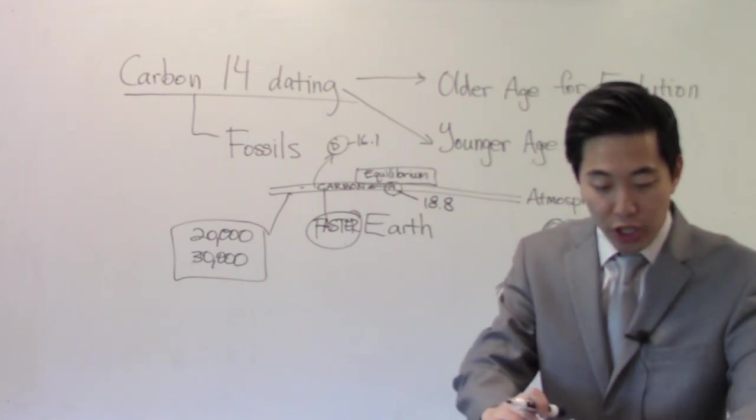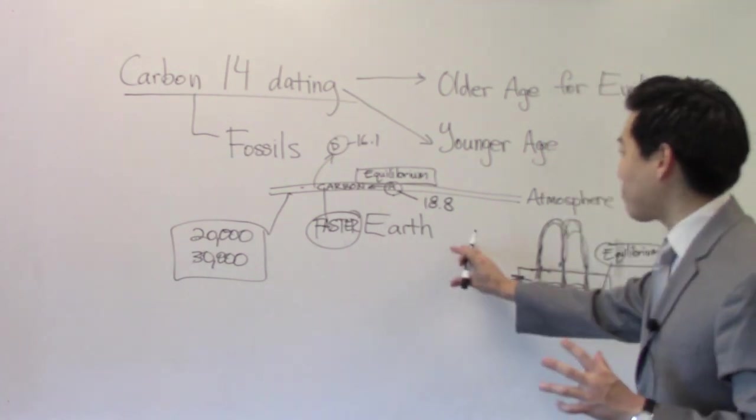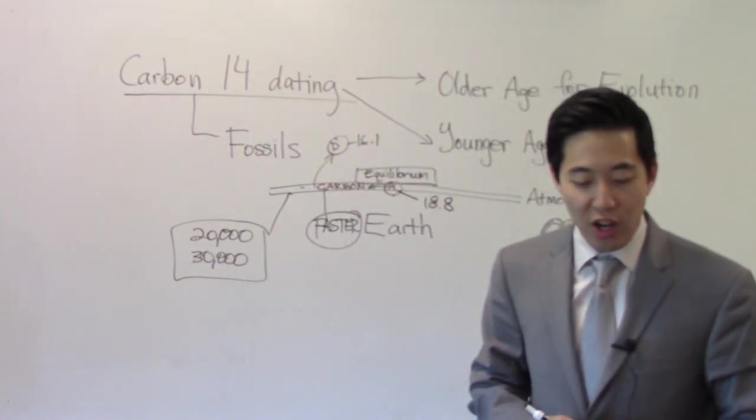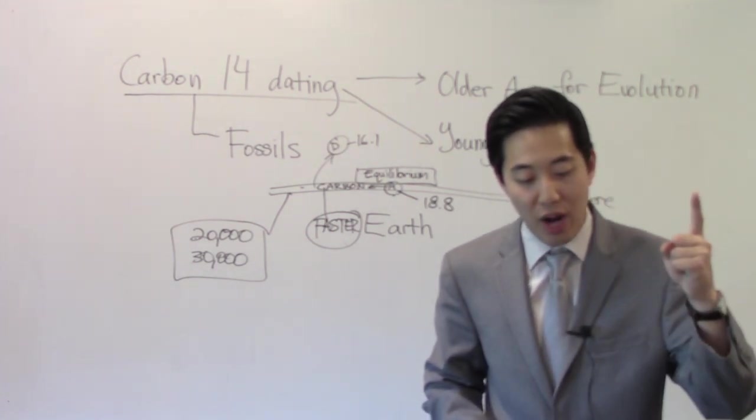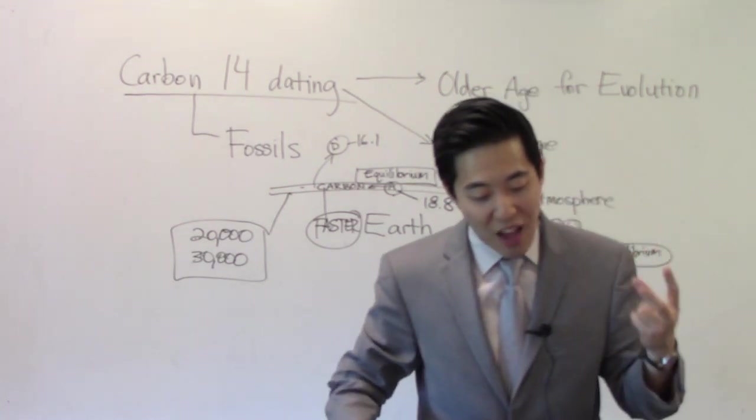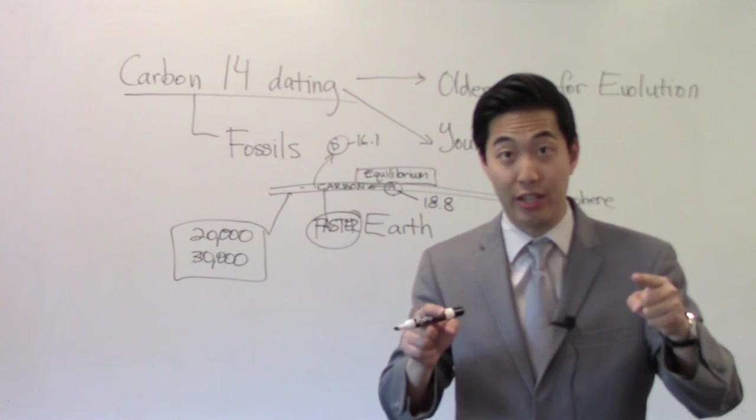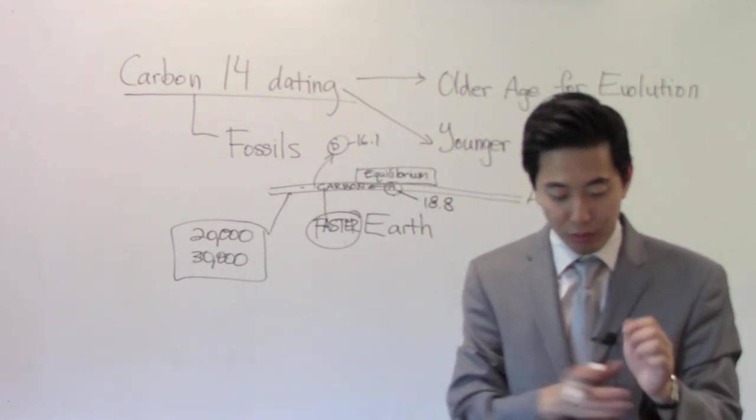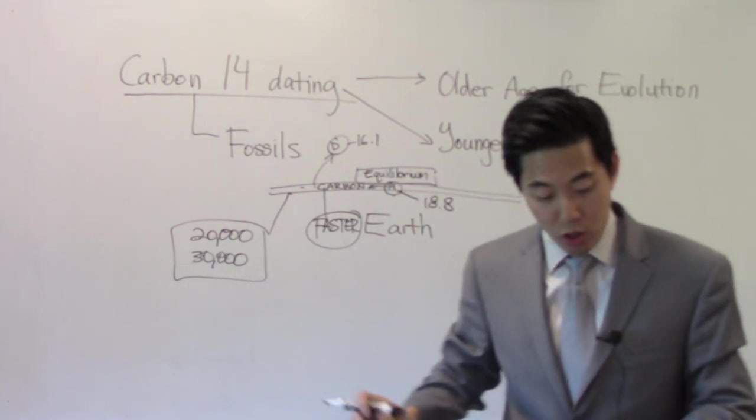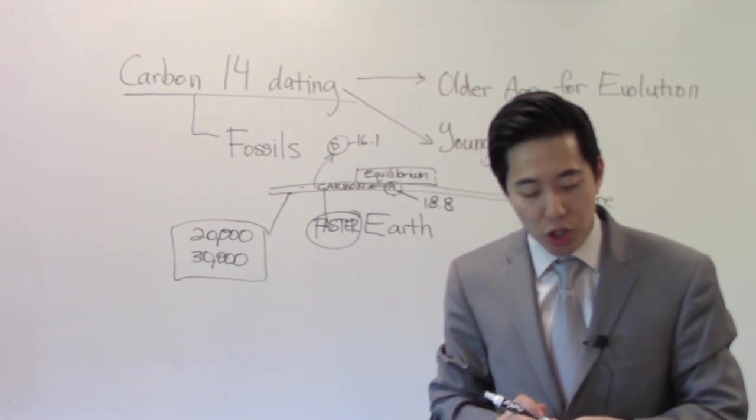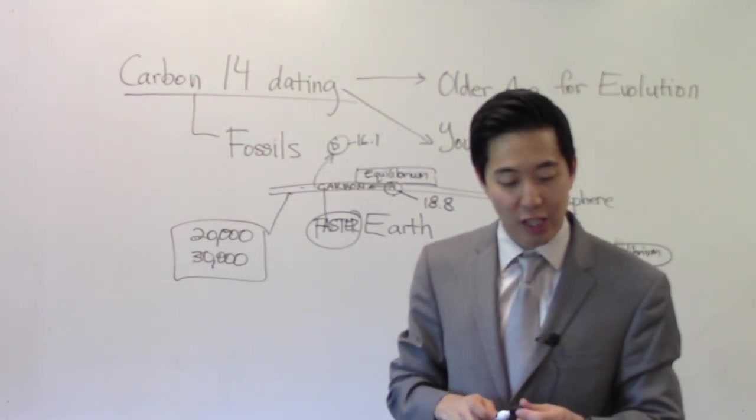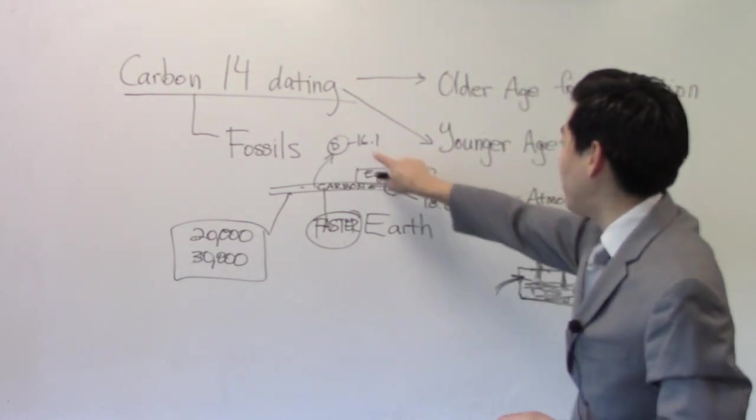But it gets even worse for evolutionists because this is a guy named Robert Whitelaw. When he realized this fact about carbon-14 dating with our earth, he concluded, quote, Robert Whitelaw, nuclear and engineering expert at Virginia Polytech Institute, found that the production rate is not equal to the disintegration rate. In fact, his calculations reveal a recent turning on of the C-14 clock. Otherwise, the two factors would be balanced equilibrium. So it must have been shorter time span. Whitelaw's research indicates that the clock was turned on approximately 8,000 years ago. This is a guy who's a nuclear and engineering expert at Virginia Polytech Institute. Because of this equilibrium factor of assimilation and disintegration.